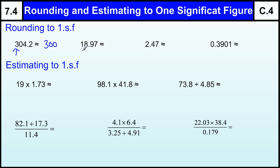18.97, the first significant figure is the one. But that one represents ten, so we need to round it to the nearest ten. And 18.97 to the nearest ten is twenty.